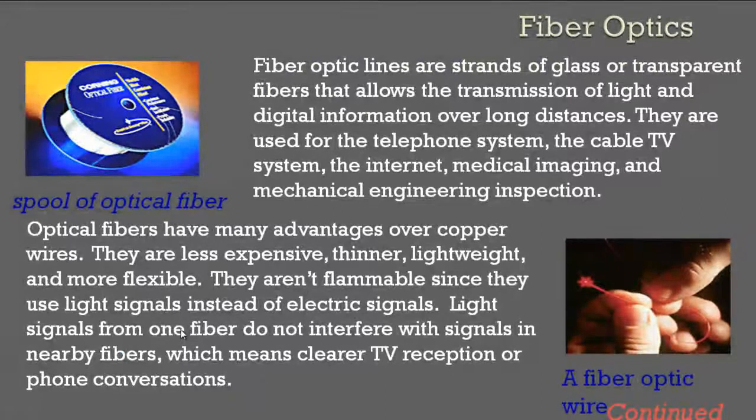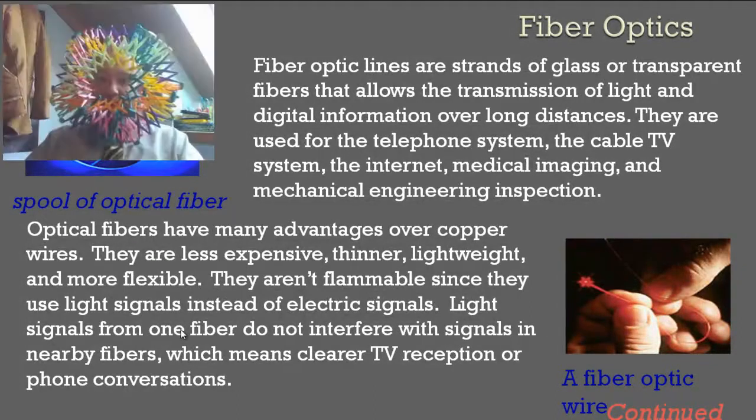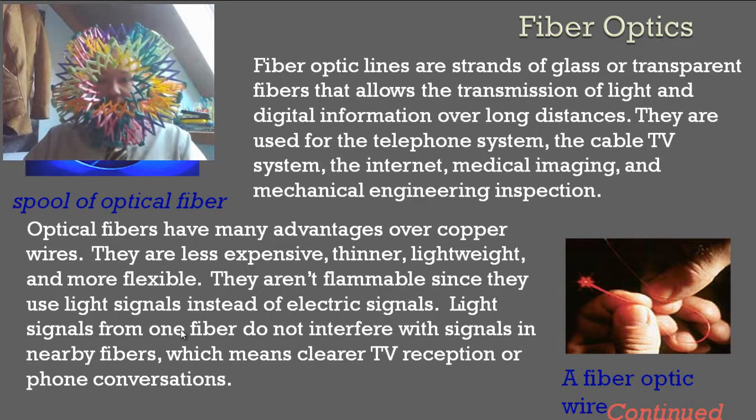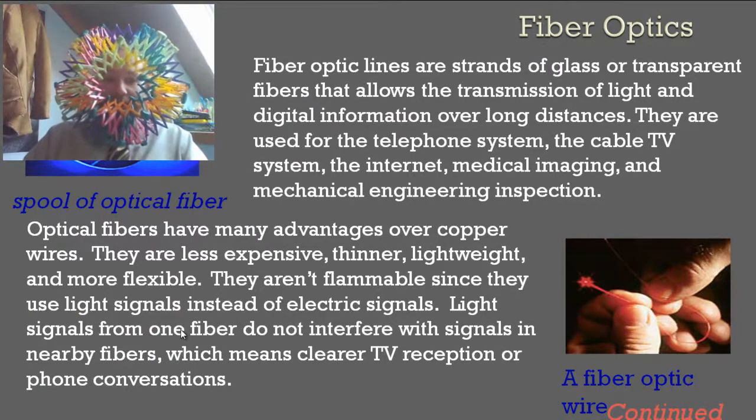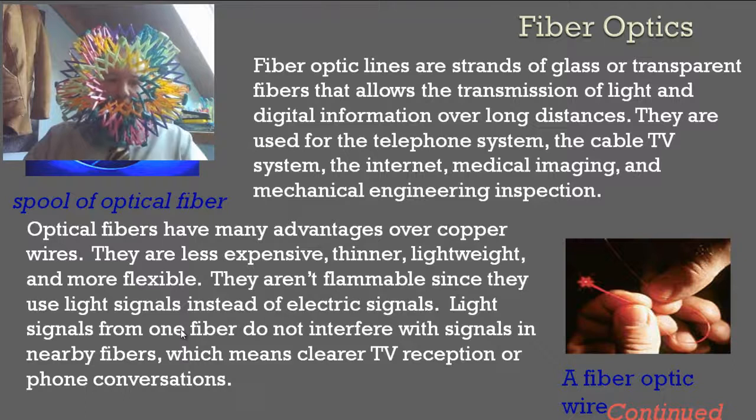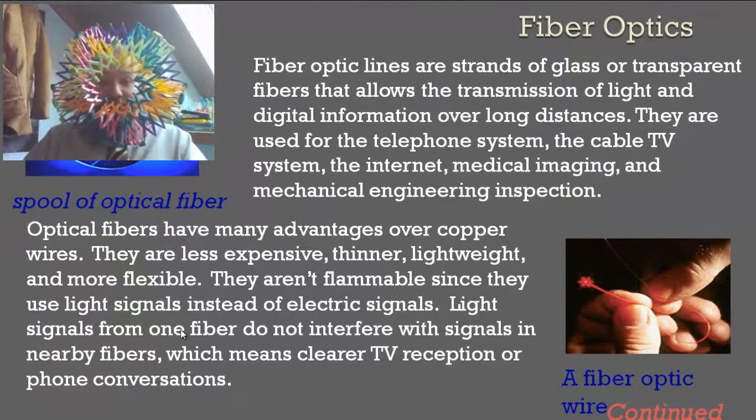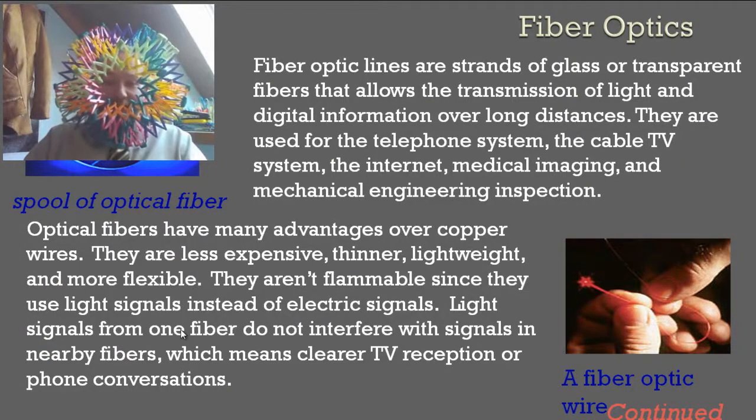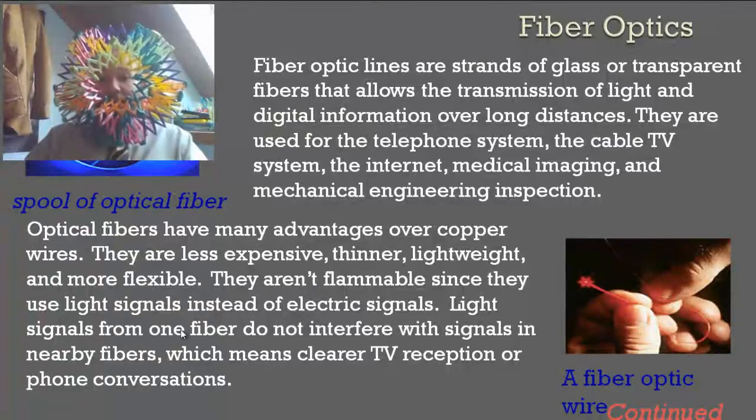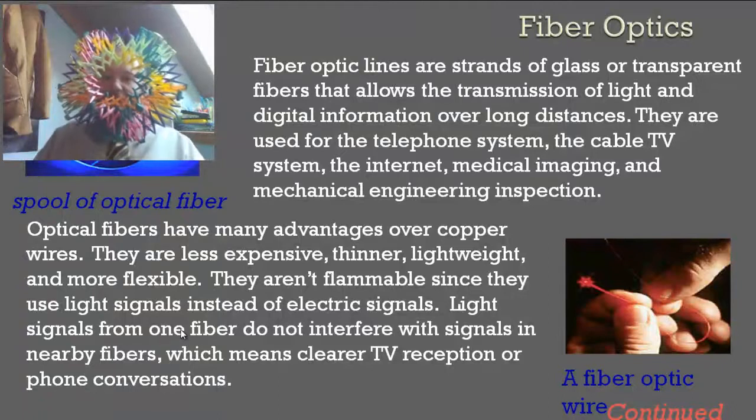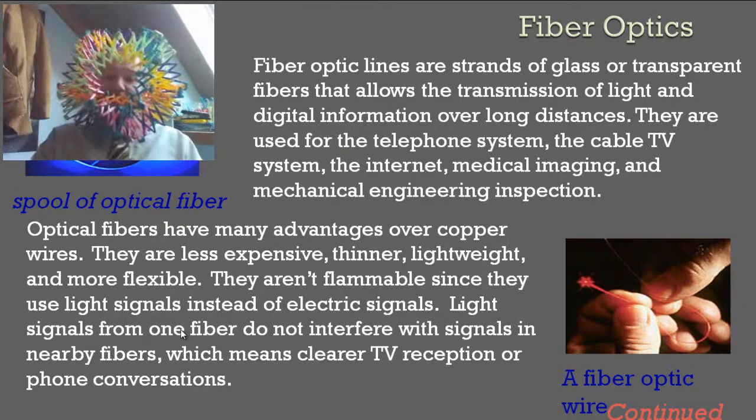Here's some stuff on fiber optics. Fiber optic lines are strands of glass or transparent fibers that allow the transmission of light and digital information over long distances. They are used for the telephone system, cable TV, the internet, medical imaging, and mechanical engineering inspection. Optical fibers have many advantages over copper wires. They are cheaper, they are thinner, they are lighter, and they are more flexible. They don't burn since they use light signals instead of electrical signals. Light signals from one fiber do not interfere with signals in nearby fibers, which means clearer TV reception or phone conversations.